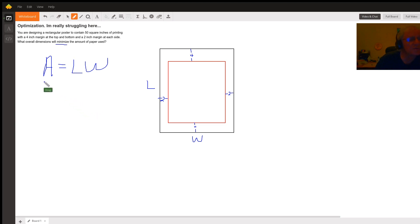Before we can take the derivative of A with respect to L or W, we have to get down to one variable over here. And so, we know that the area of this red rectangle is 50 square inches.